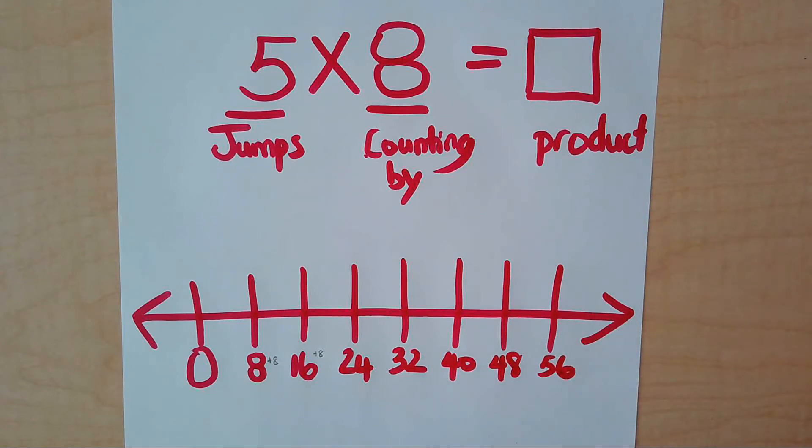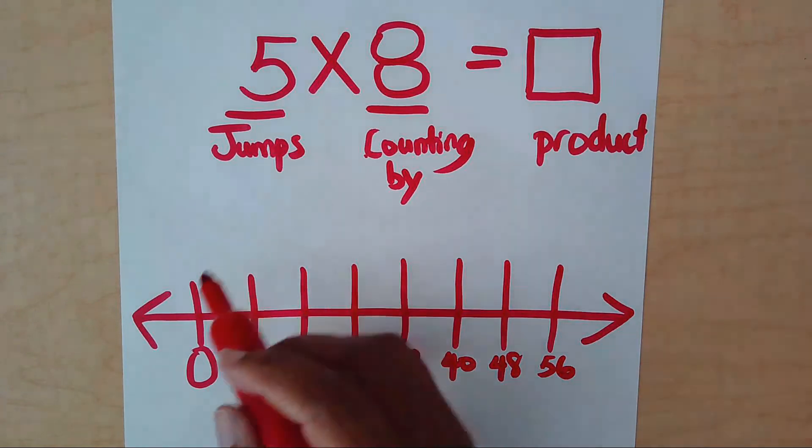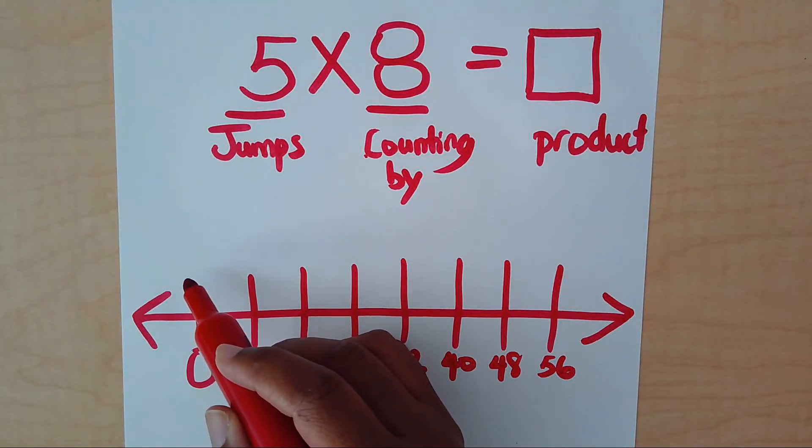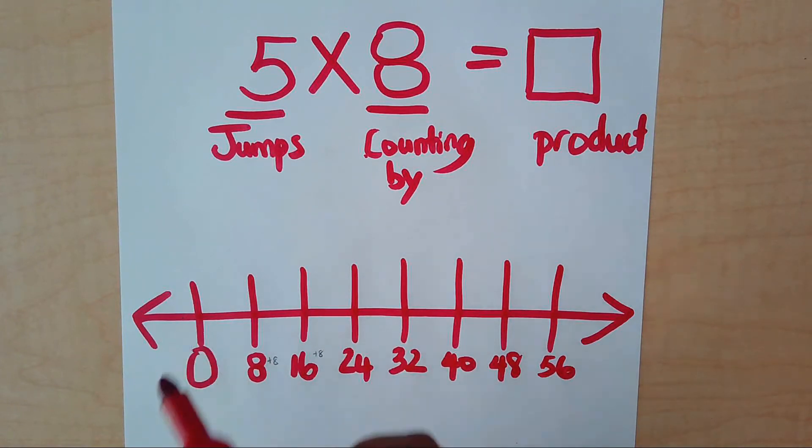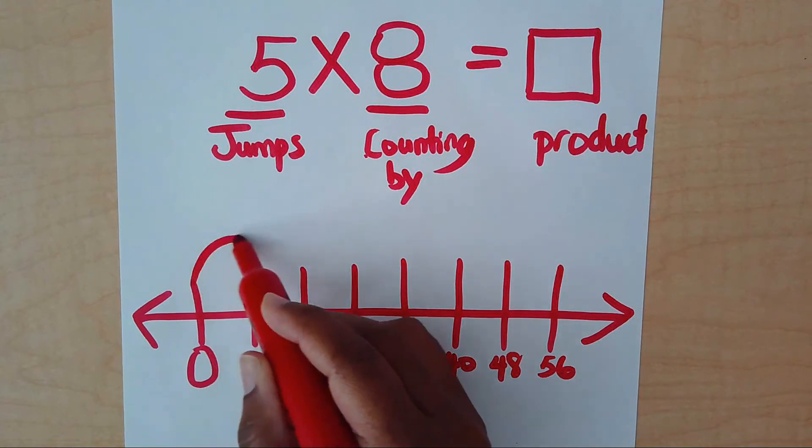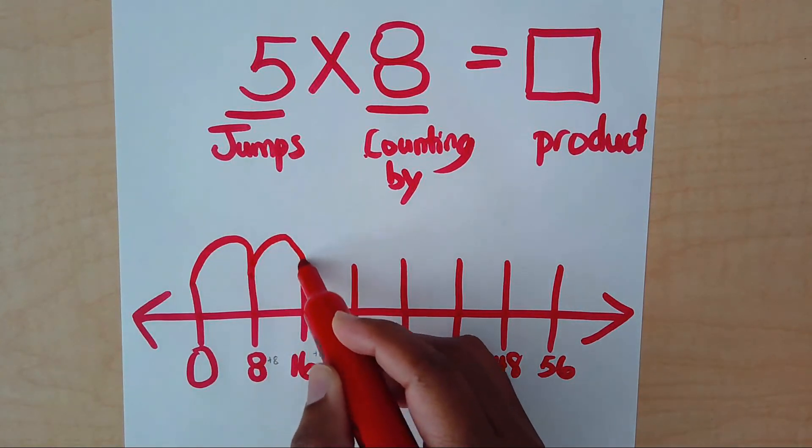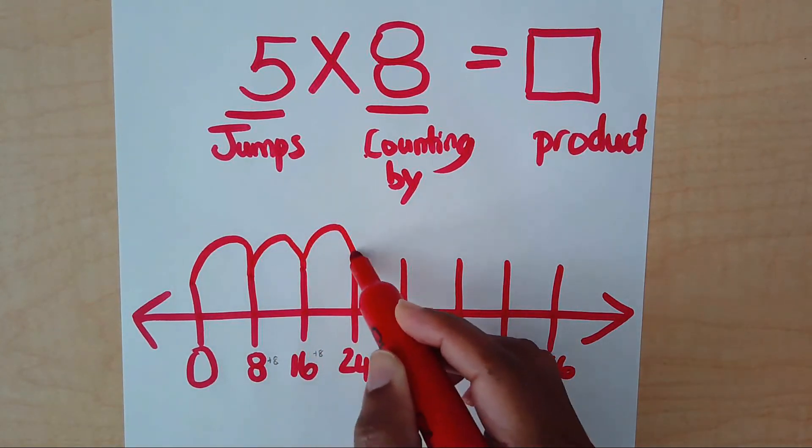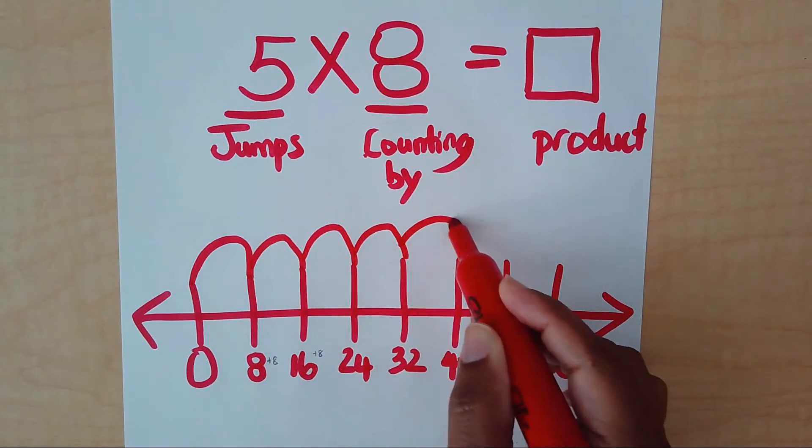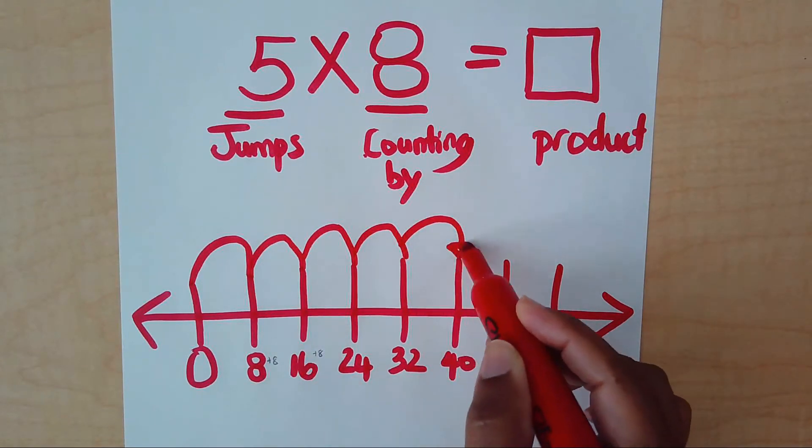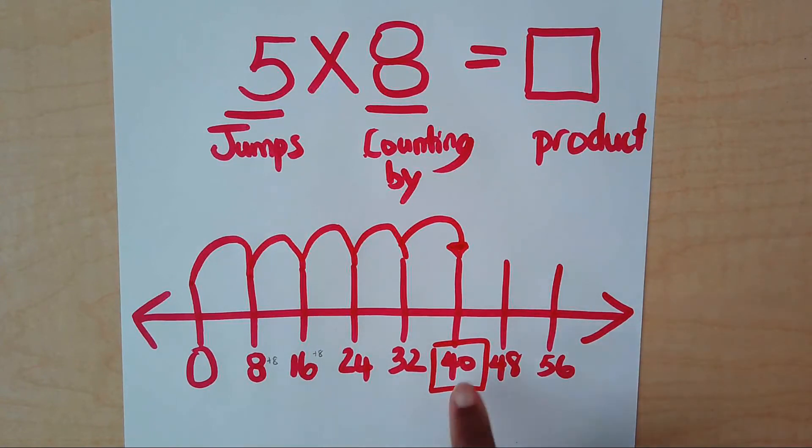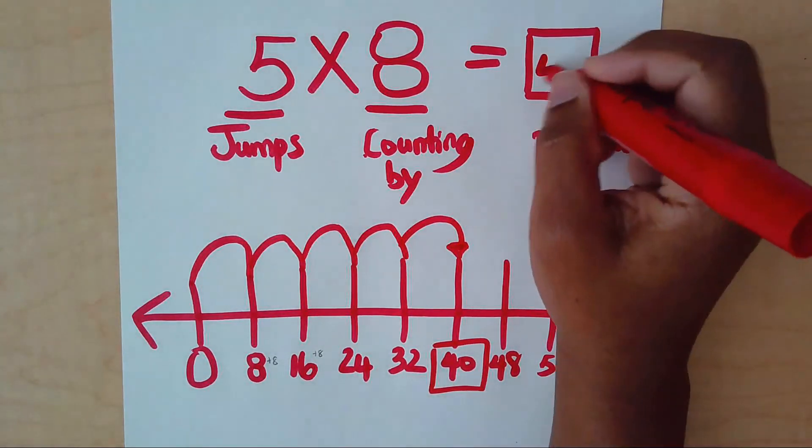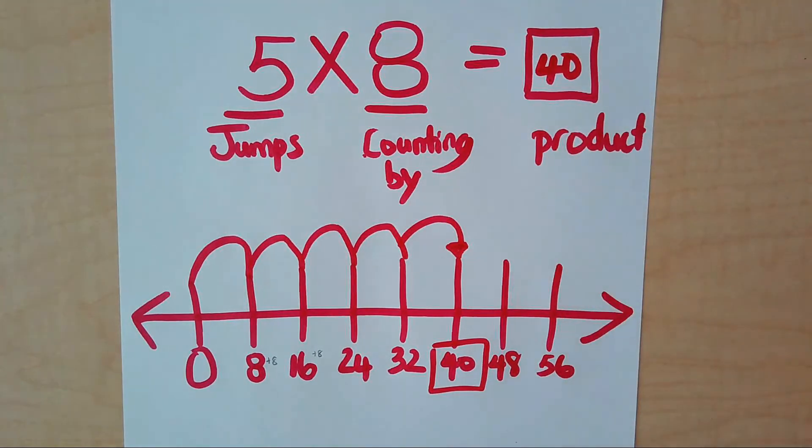Now how many jumps do I need to make? I need to make five jumps. How do we count when we jump? Do we count before we land? No. We count when we land. So let's go. One, two, three, four, five. Five jumps. What is the product? The product is 40.